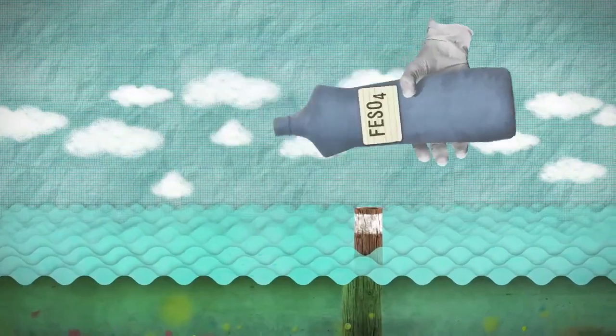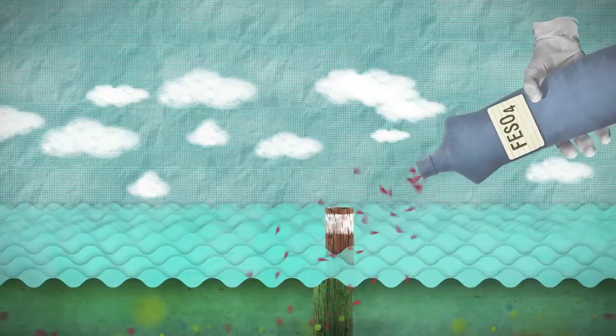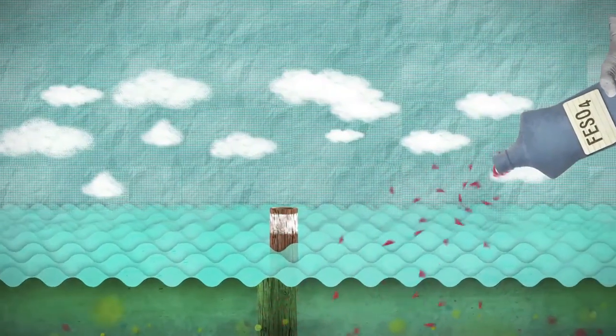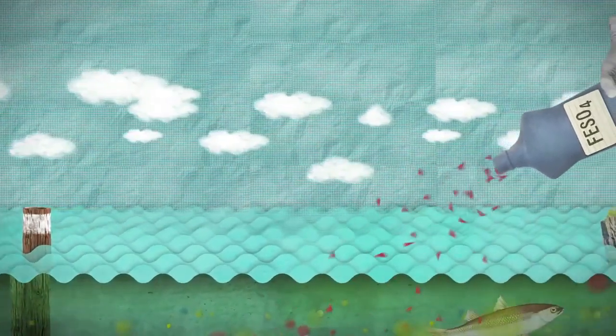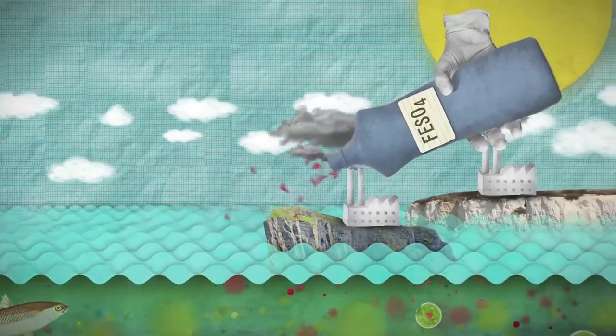One such technology for carbon dioxide removal is so-called ocean fertilization. Under this plan, many thousands of tons of iron filings or other nutrients would be dumped in the oceans each year to stimulate the growth of plankton.